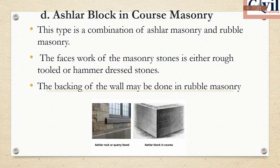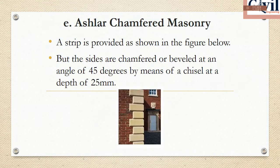The fourth category is Ashlar Blocking Course, which is a combination of ashlar masonry and rubble masonry. Ashlar masonry is used for the face walls, while rubble masonry is preferred for the back walls.